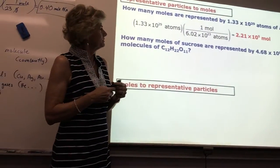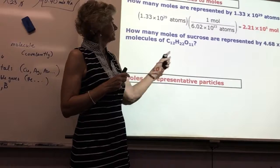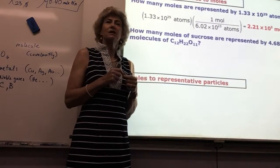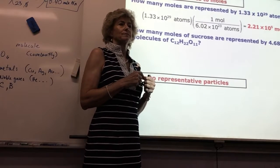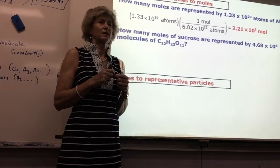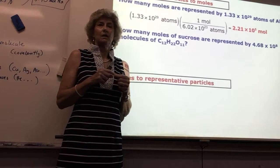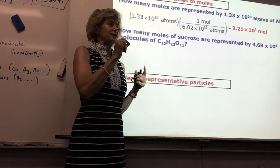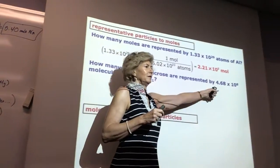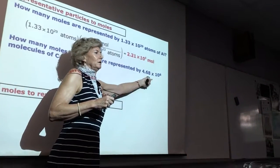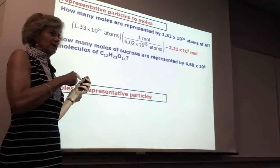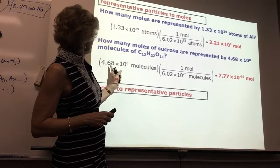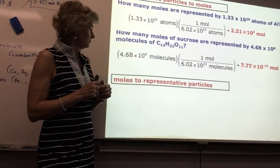How many moles of sucrose are represented by 4.68 times 10 to the 8th molecules of sucrose? So I'm giving you molecules, a representative particle. We need to get to moles. 7.77 three sig figs times 10 to the minus 16 moles of sucrose.